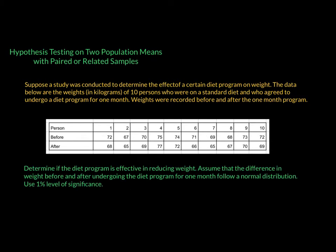We want to determine if the diet program is effective in reducing weight. There is an assumption that the difference in weight before and after undergoing the program follows a normal distribution — this is important because we need that assumption to perform the testing. The level of significance we will use for this hypothesis test is one percent.